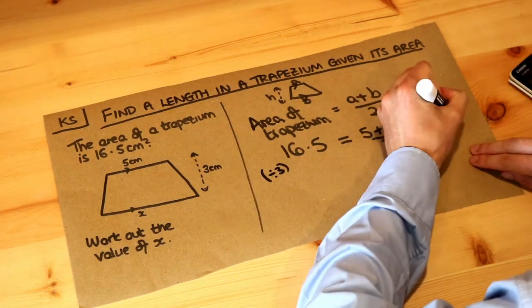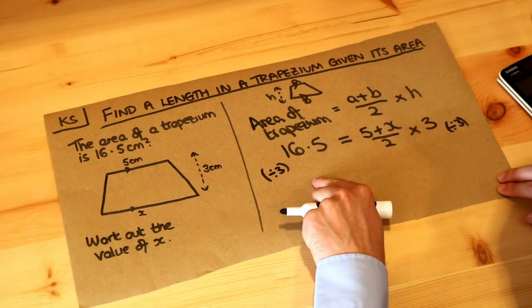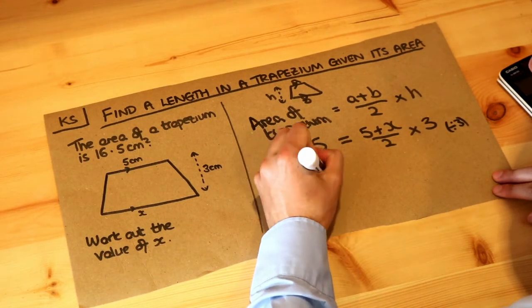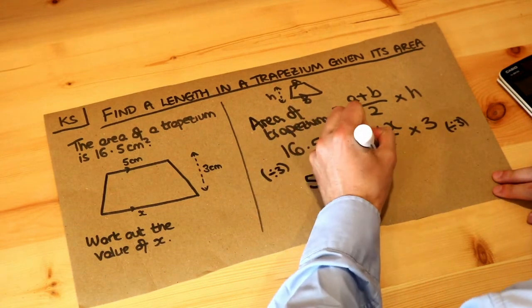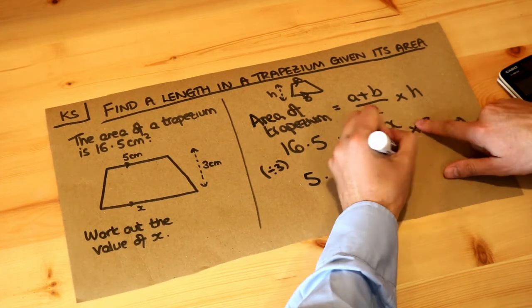So divide both sides by 3. 16.5 divided by 3 is 5.5. And that gets rid of that times by 3.